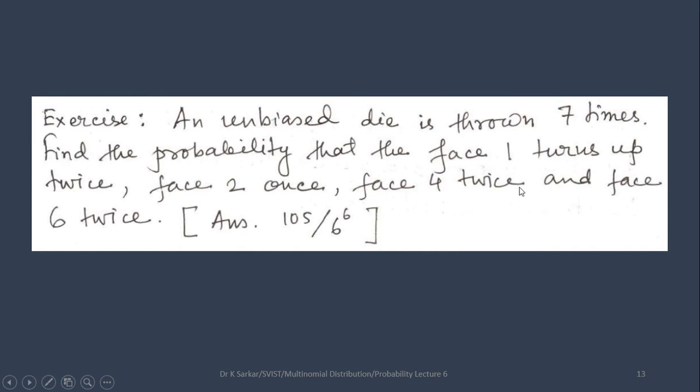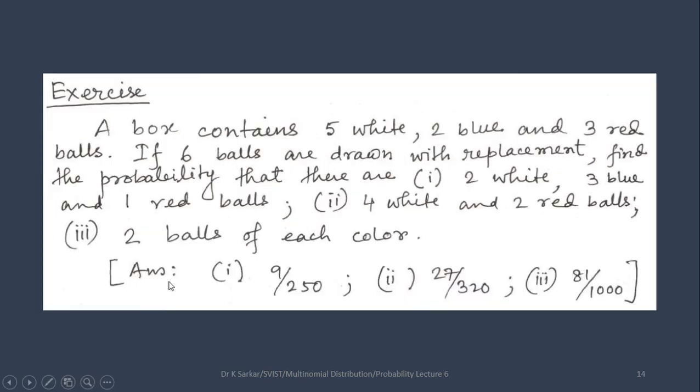Look at here, face 1 turns up twice, face 2 once, face 3 not given. So face 3 you will take as 0, face 4 given, face 5 is not given. So face 5 you will take as 0.